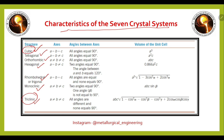For the cubic system, a = b = c and all angles equal 90°. For tetragonal, a = b ≠ c and all angles equal 90°. For orthorhombic, a ≠ b ≠ c and all angles are equal to 90°.